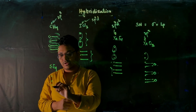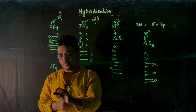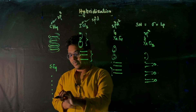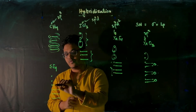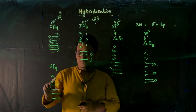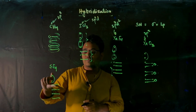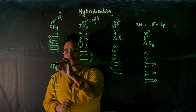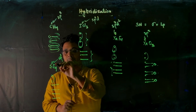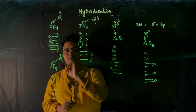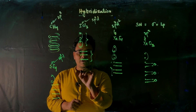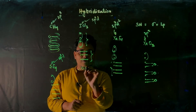Similarly, for SF₄, sulfur has six valence electrons. Four fluorine atoms each form one sigma bond, giving four sigma bonds, and there is one lone pair remaining. So the steric number is five, and the hybridization will be sp³d.